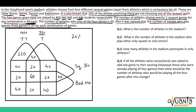Similarly, for tennis we had 360 people. The sum of all known regions in tennis is 40 plus 20, 60, plus 40, 100, plus 60, 160, plus 20, 180, plus 20 plus 40 gives 240. So 360 minus 240 gives us 120.